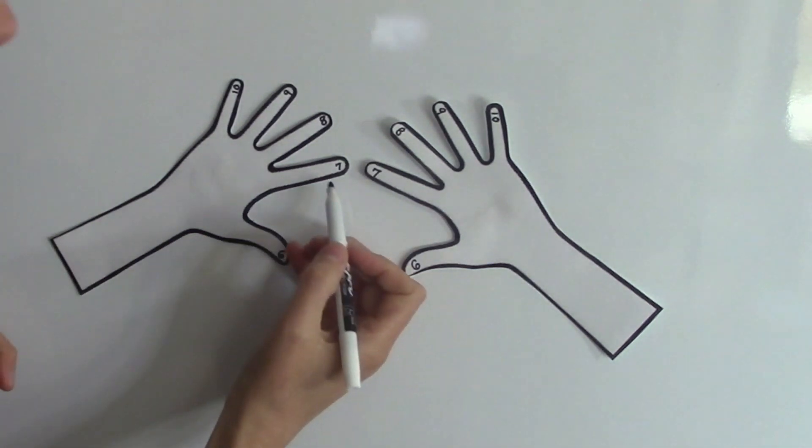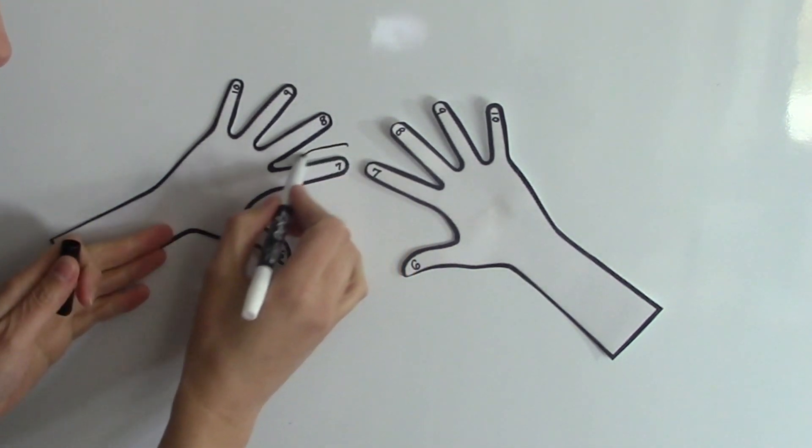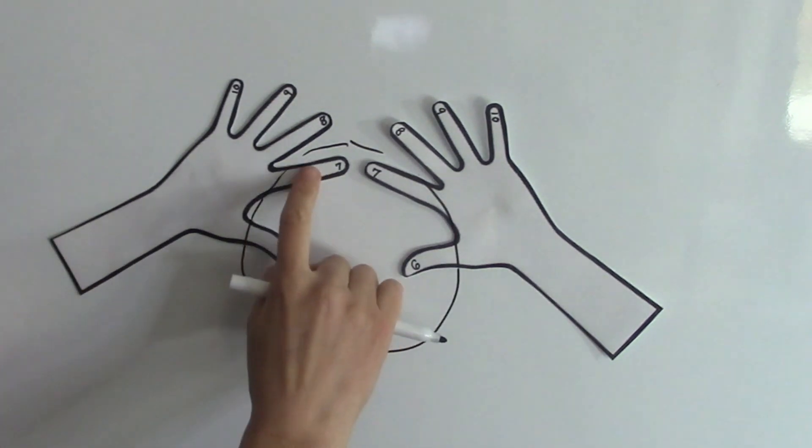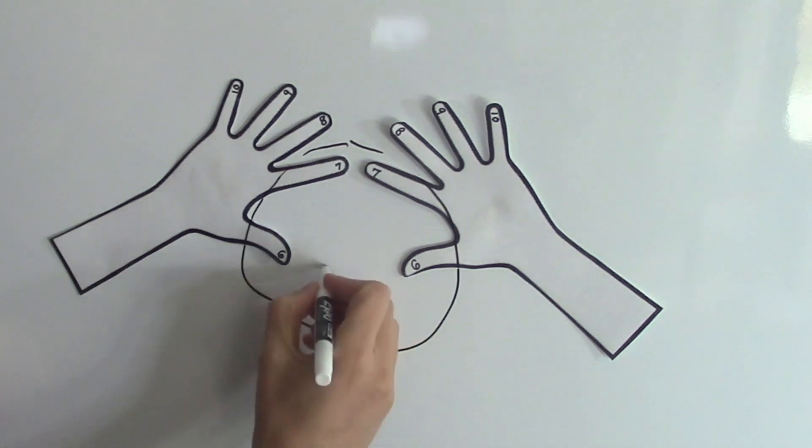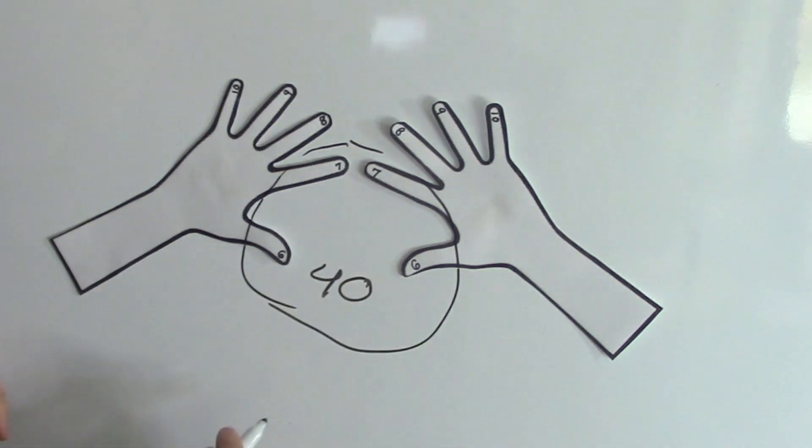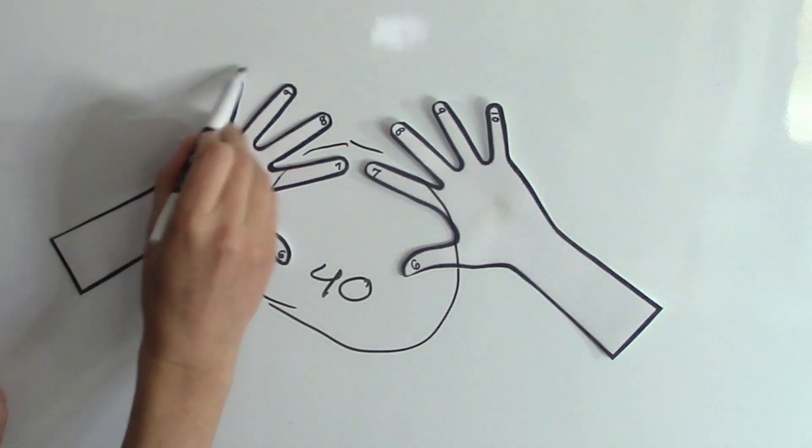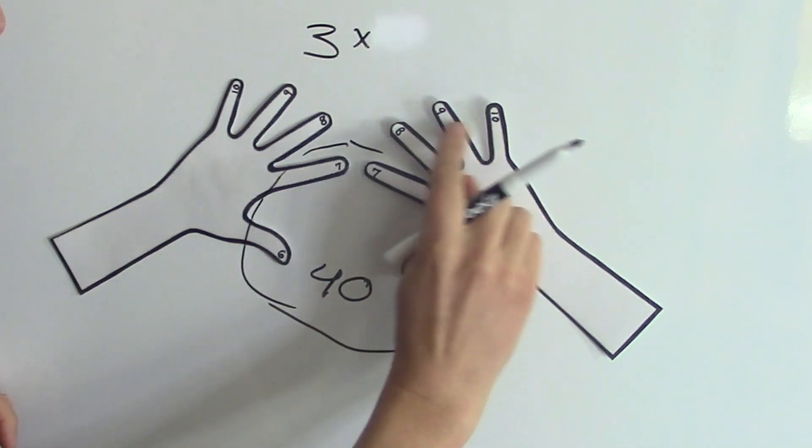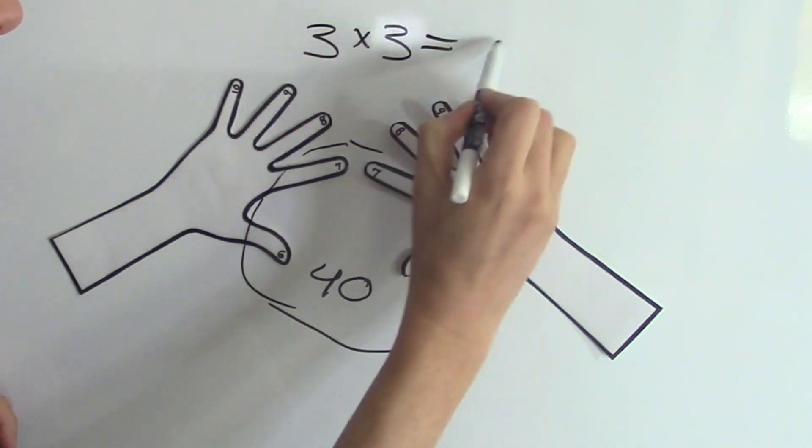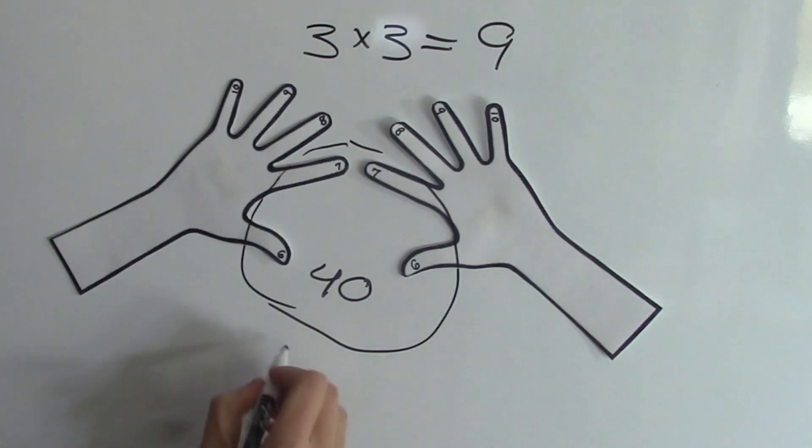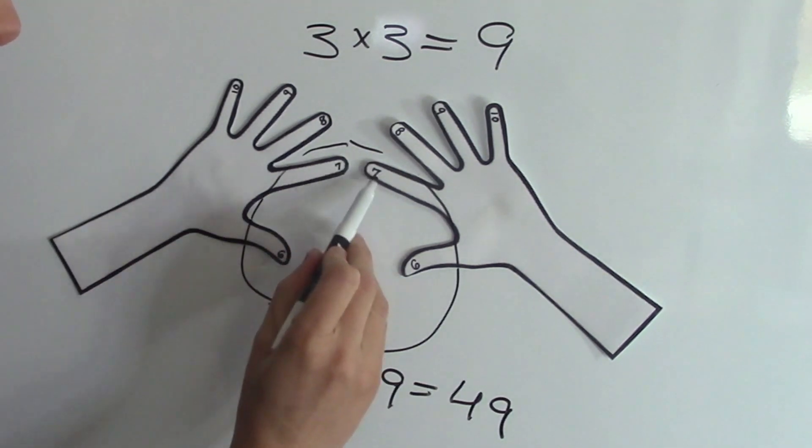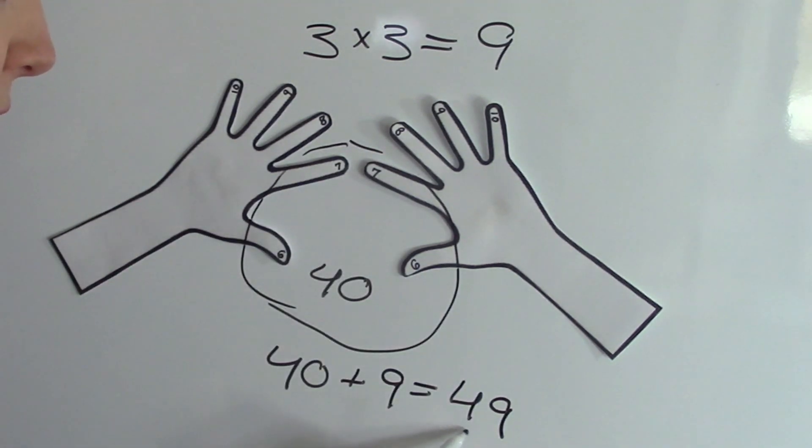Let's try another one. 7 times 7. So I'm going to take my 7 and 7 and count how many fingers I have below. So 1, 2, 3, 4. So that's going to give me 40. Now I have 3 above the 7 over here times 3 above the 7 over here, which gives me 9. So then I go 40 plus 9 equals 49. So 7 times 7 equals 49.